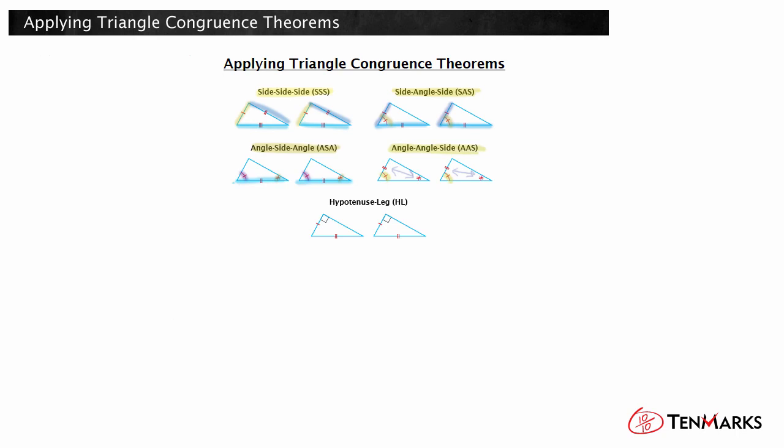The final theorem only applies to right triangles. If two right triangles have congruent hypotenuses and a pair of congruent legs, they are congruent by the HL congruence theorem.